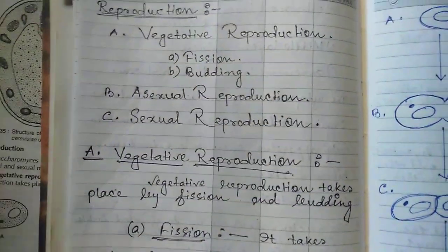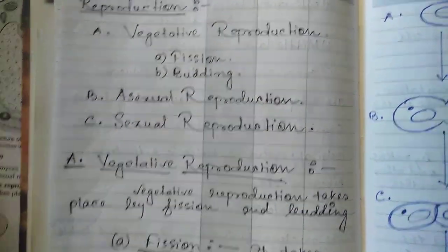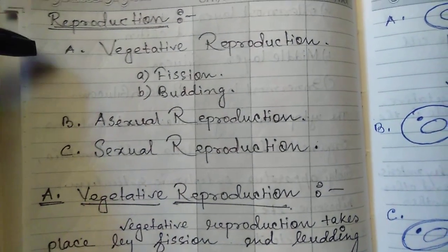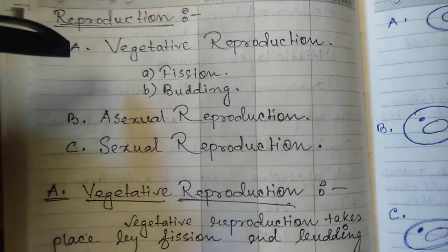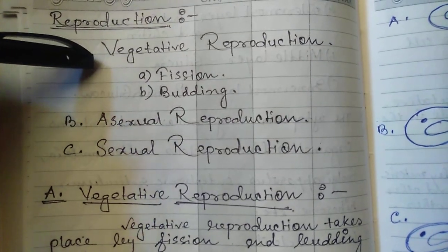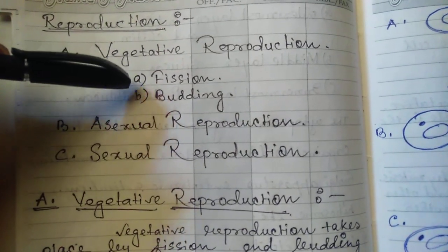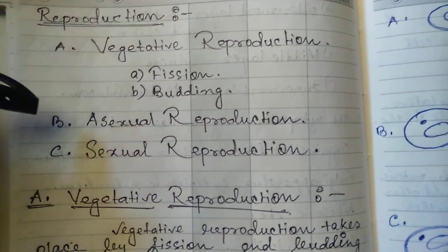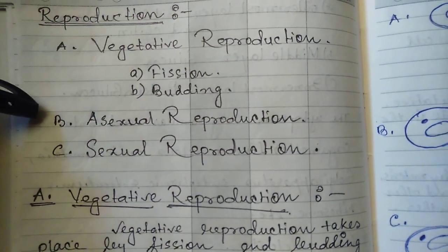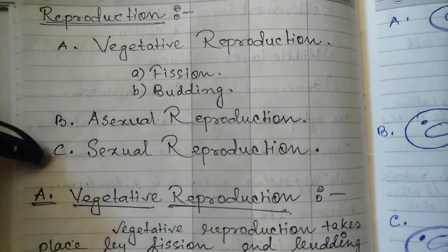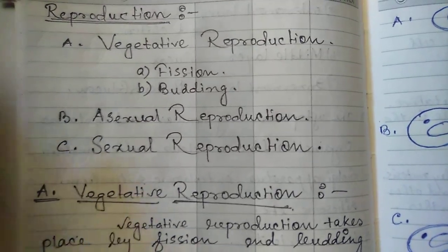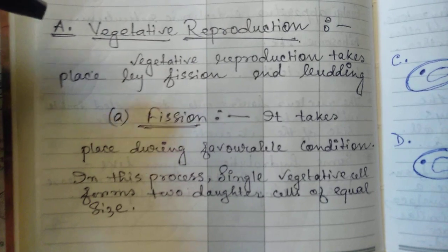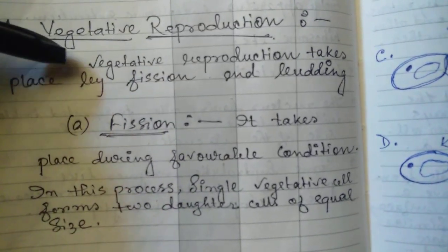The reproduction of this fungi basically consists of three methods: the first is vegetative reproduction, which is divided into two methods — fission and budding; the second is asexual reproduction; and the third is sexual reproduction.